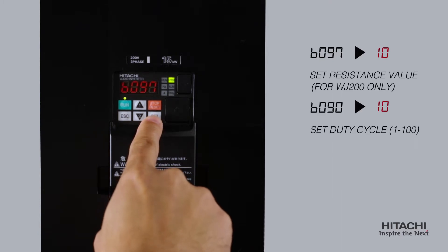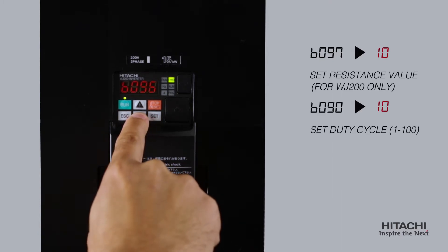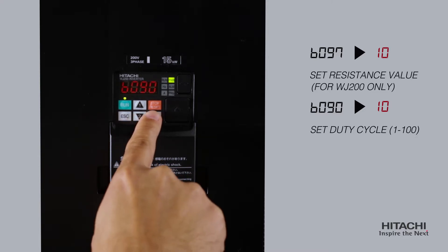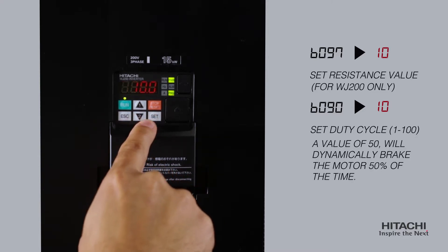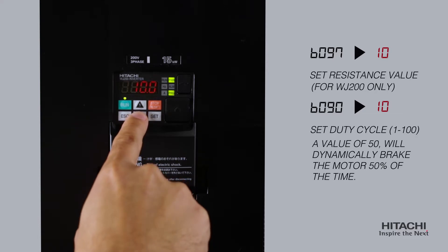Set B90 to a duty cycle from 1 to 100. A value of 50, for example, will dynamically brake the motor 50% of the time. This value will be limited by the selection of B97.